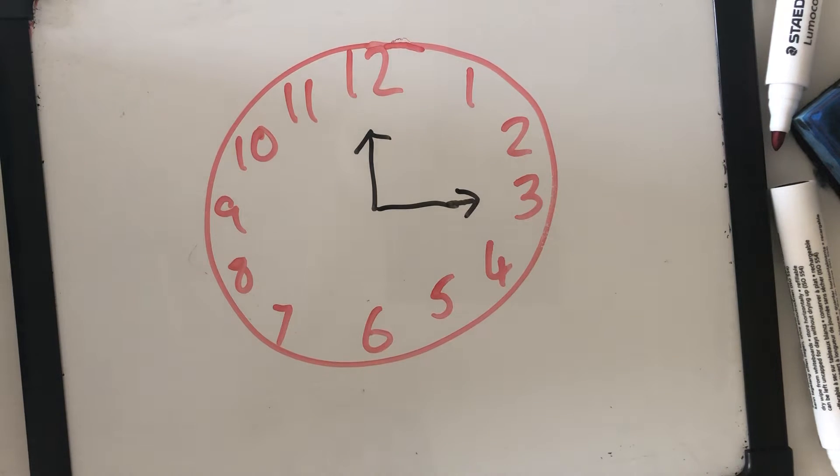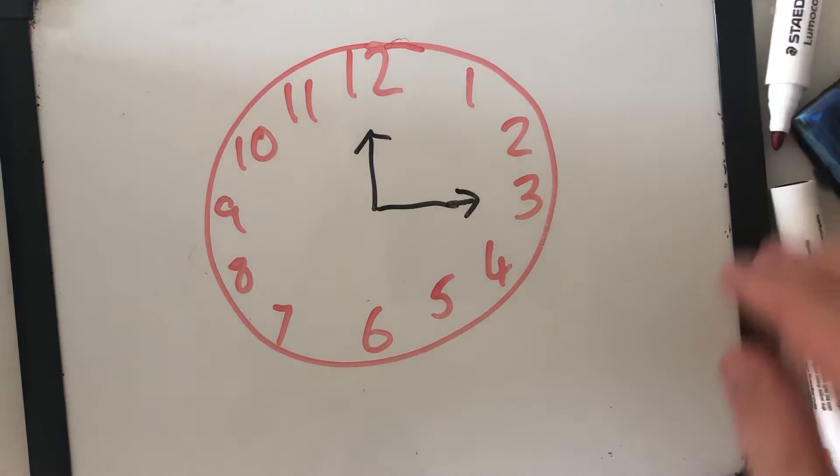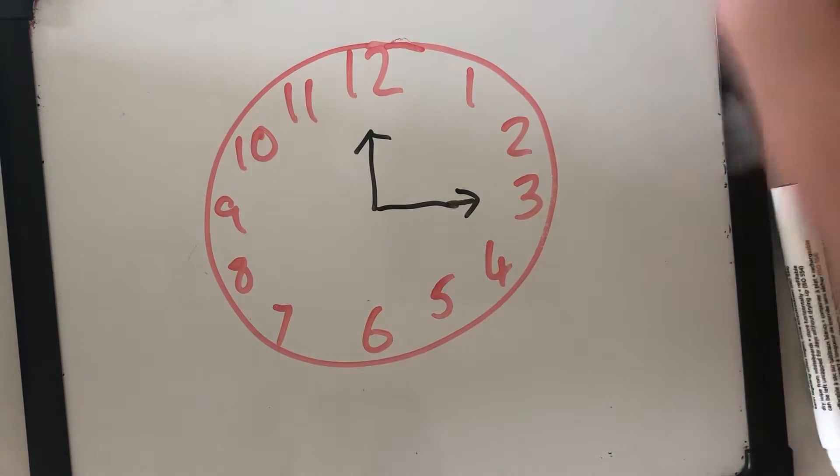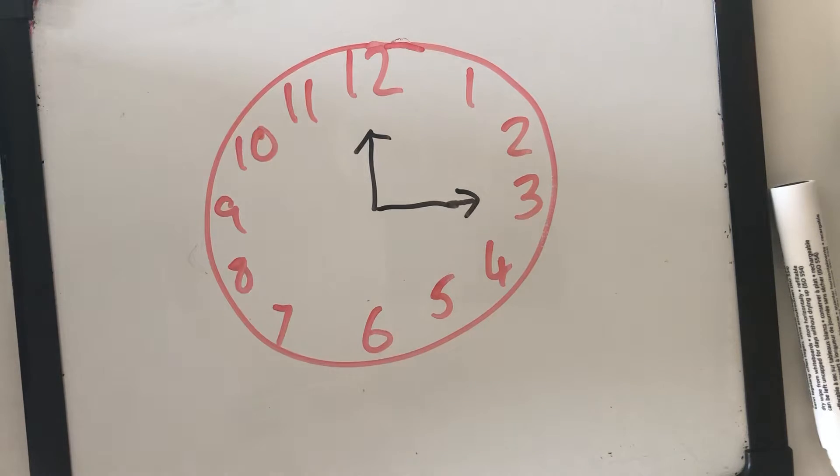For our handwriting focus today, we are looking at anti-clockwise patterns. What I've drawn here to introduce what that means is a clock. You can look around your house or room and you might see a clock that looks something similar to this.